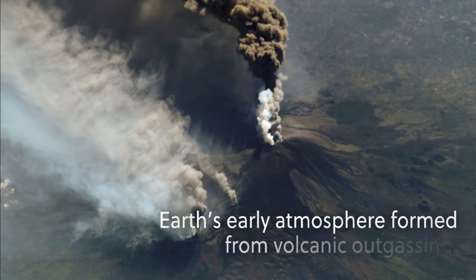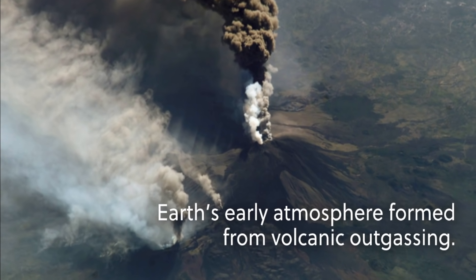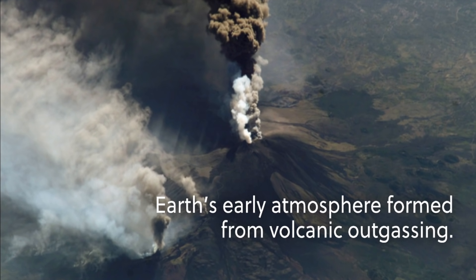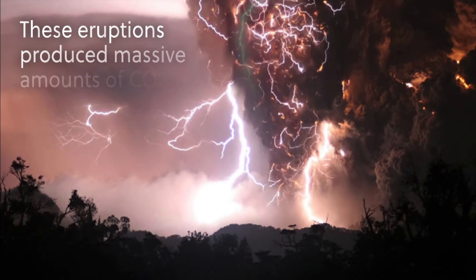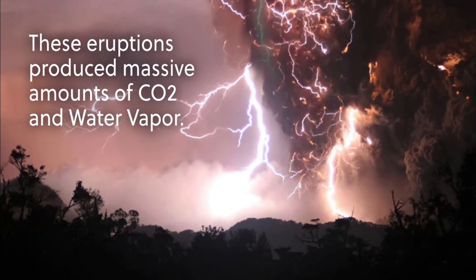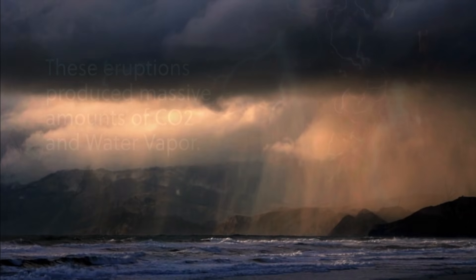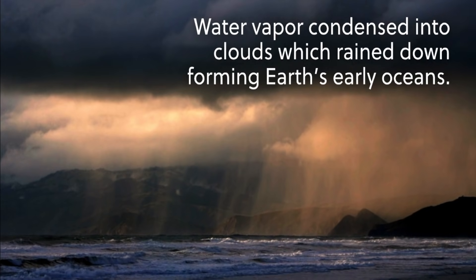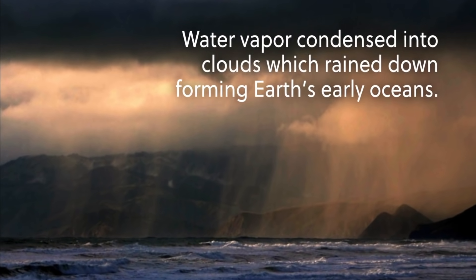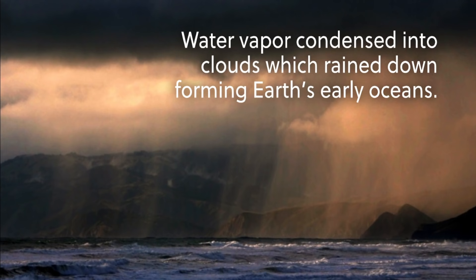The early atmosphere is thought to have formed from a process known as volcanic outgassing, the release of gases from the interior of the Earth through volcanoes. This early atmosphere was rich in carbon dioxide, or CO2, and water vapor. And that water vapor eventually condensed into giant clouds, which rained down for millions of years, forming the early oceans.